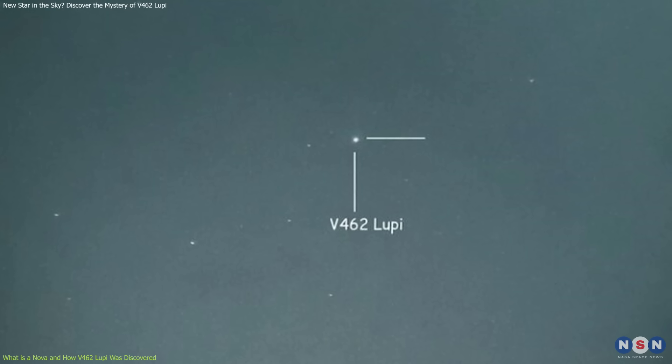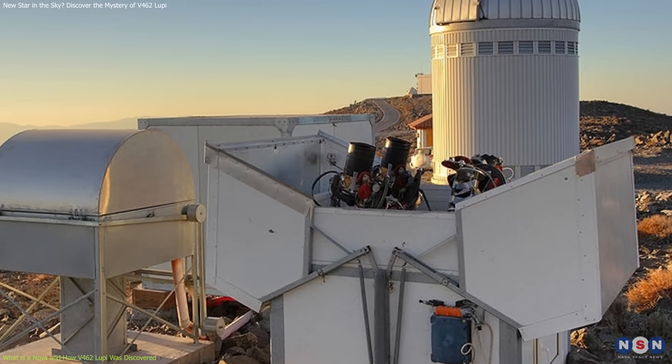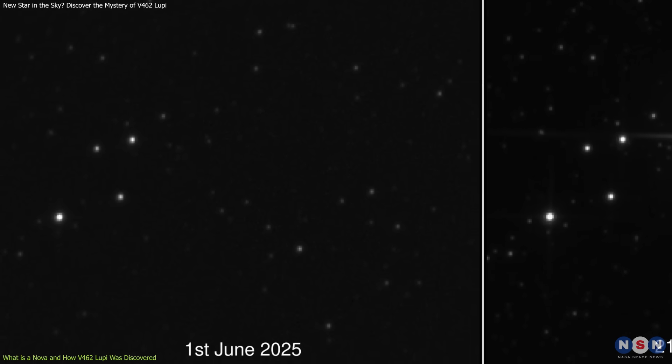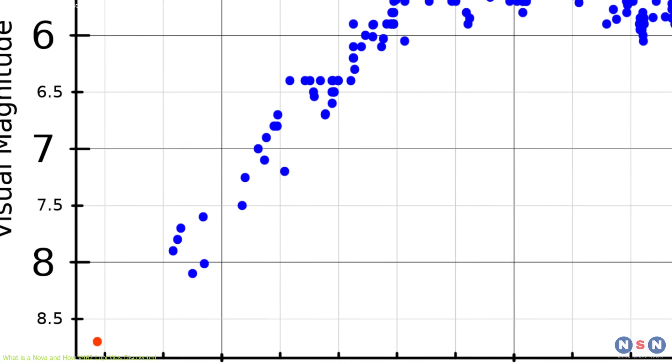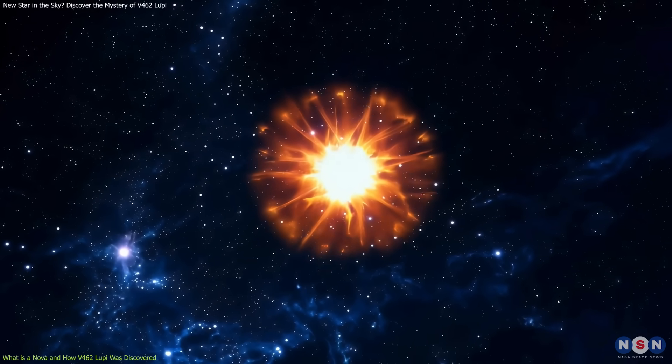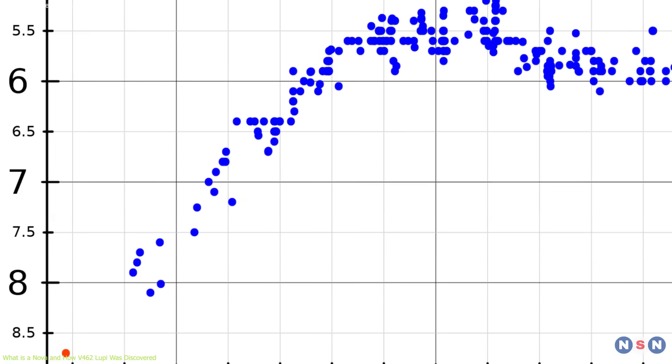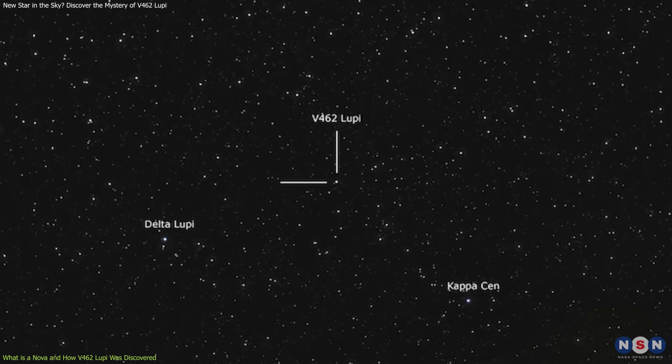On June 12th, 2025, V462 Lupe was discovered by the All-Sky Automated Survey for Supernovae. Initially, the nova was too faint to be seen without a telescope, registering at a magnitude of 8.7. However, by June 18th, the brightness had increased significantly, reaching magnitude 6.1, making it visible to the naked eye in ideal conditions.